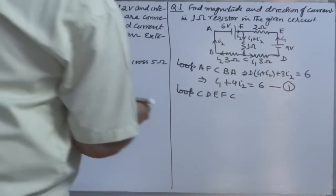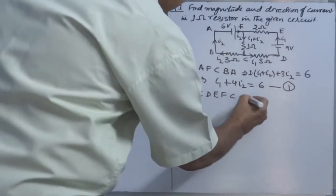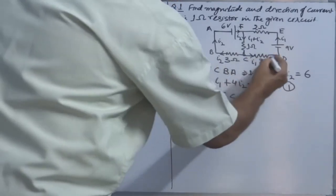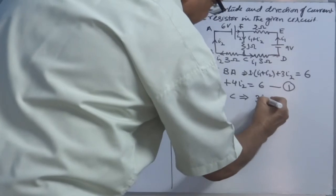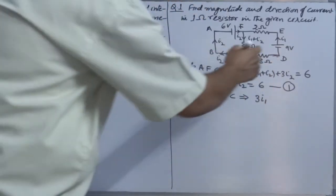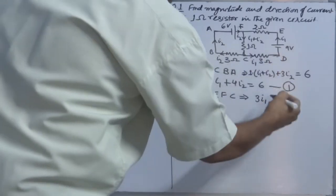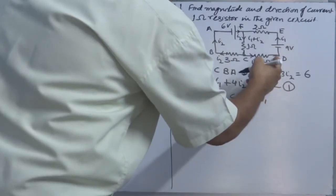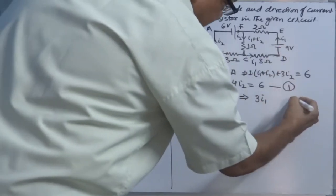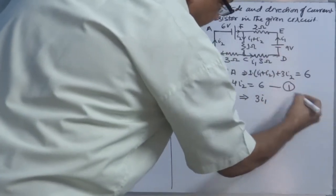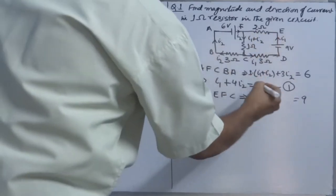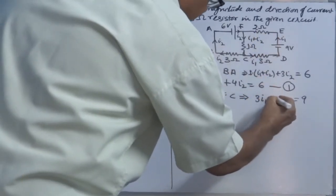In loop CDEFC: starting from C, the direction of current gives 3I1. Moving from D to E, we again interact with the negative terminal first, so this goes to the right-hand side as positive. Then from E to F, direction of current is same, so this is 2I1.